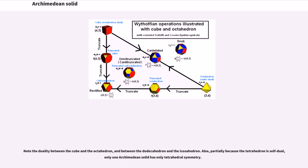Note the duality between the cube and the octahedron, and between the dodecahedron and the icosahedron. Also, partially because the tetrahedron is self-dual, only one Archimedean solid has only tetrahedral symmetry.